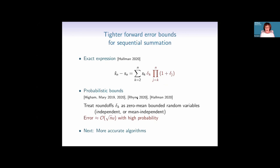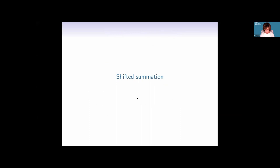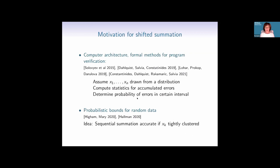Eric has an explicit expression for the error in sequential summation, which I come back to later. There are also probabilistic bounds — Nick has been involved in those — where one treats the round-offs as random variables with bounded zero mean, either independent or mean-independent. With high probability, one can show the error is proportional to the square root of n times machine precision, rather than n times machine precision.